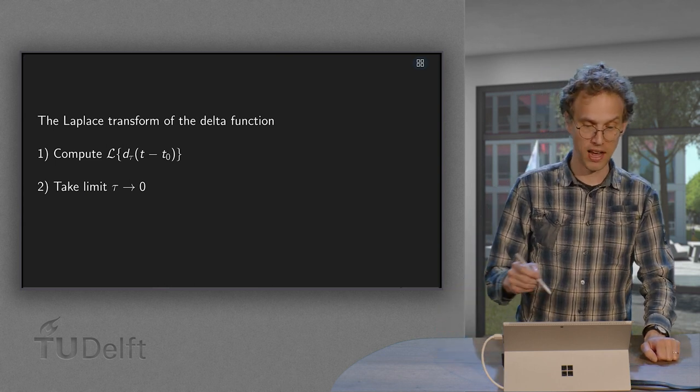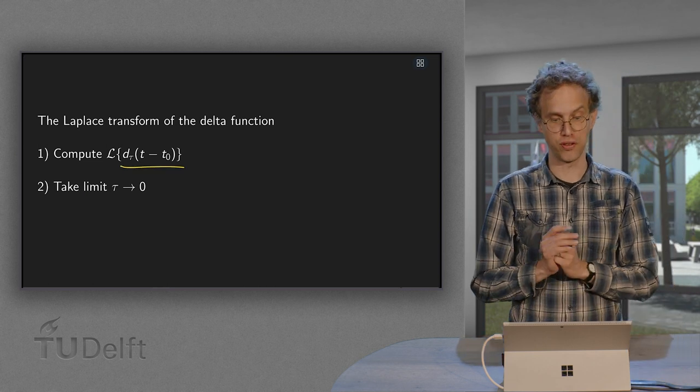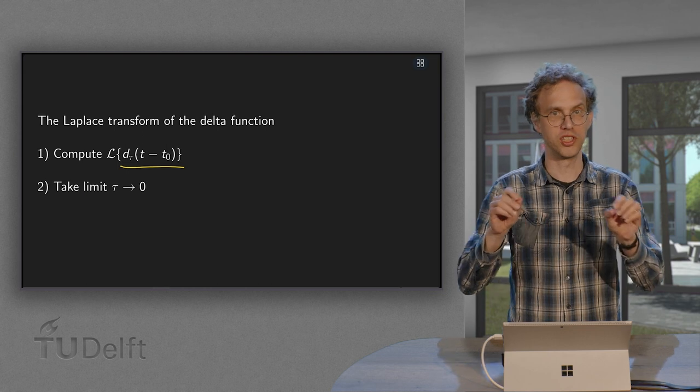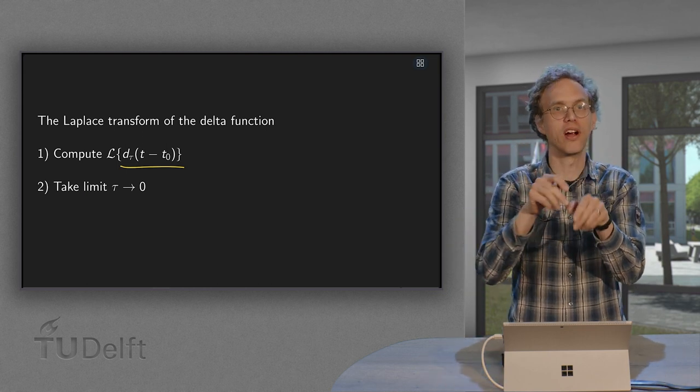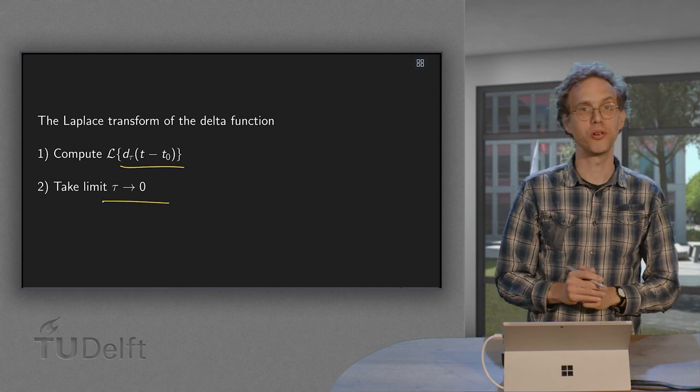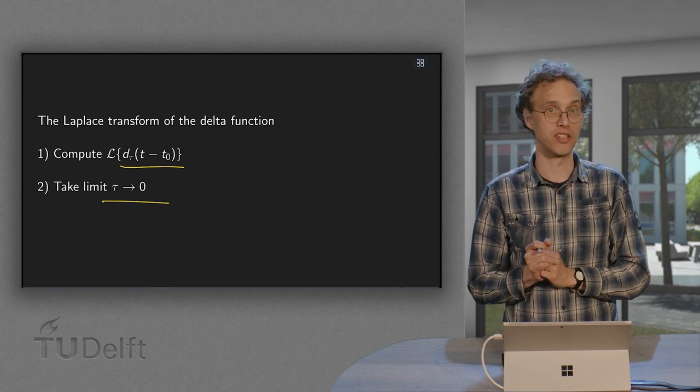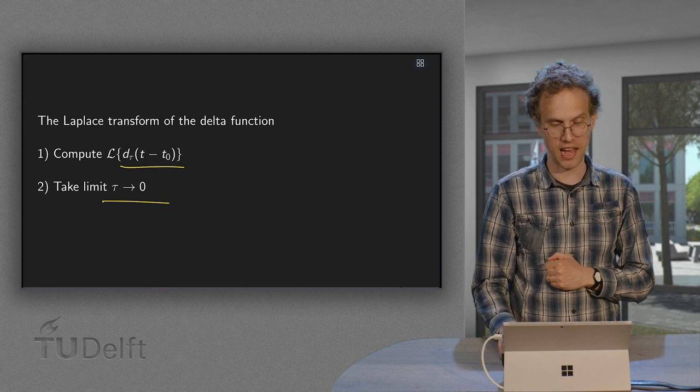So what is the plan? First we compute the Laplace transform of this d_τ of t minus t₀. Those are fine, those are just normal functions, like the rectangles which became smaller and higher. So we can do those. And then we take the limit τ → 0 and see what we get, and that is what we will define as our Laplace transform of the delta function. So that's the plan.